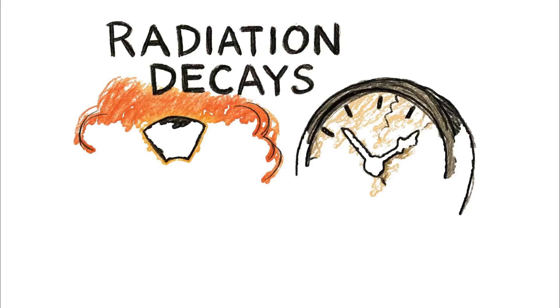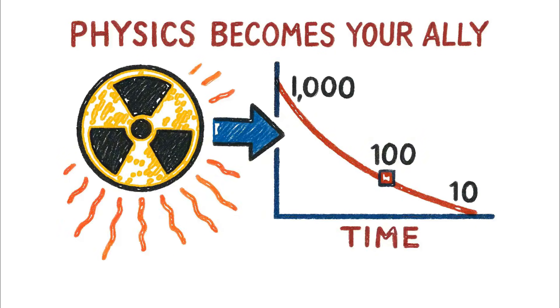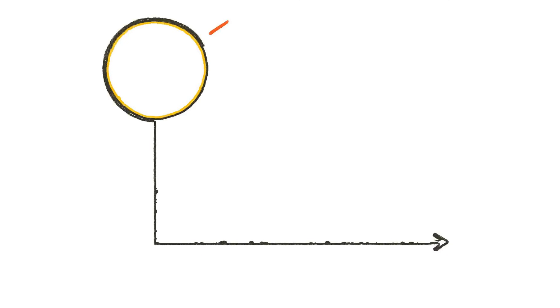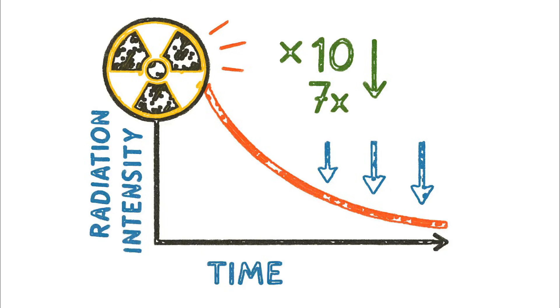But while the biological damage is terrifyingly swift, the radiation source itself decays. This is where physics becomes your ally, governed by the rule of seven. For every seven-fold increase in time after a nuclear event, the radiation intensity drops by a factor of 10.